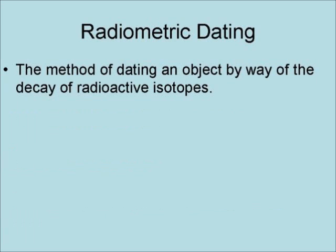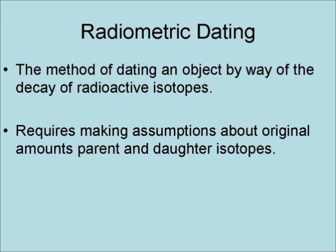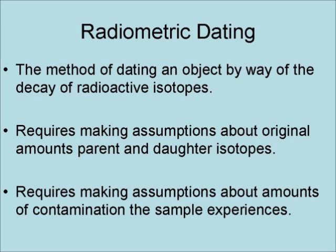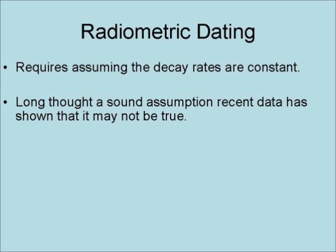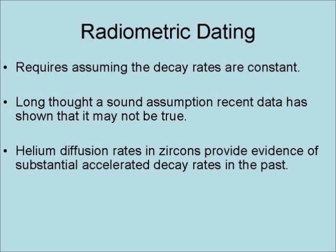Radiometric dating is the method of dating an object by way of the decay of radioactive isotopes. It requires making assumptions about the original amounts of both parent and daughter isotopes, assumptions about the amount of contamination the sample has experienced, and the assumption that decay rates have been constant. Recent data has shown that this may not be true; helium diffusion rates in zircon crystals have provided evidence for substantially accelerated decay rates in the past.